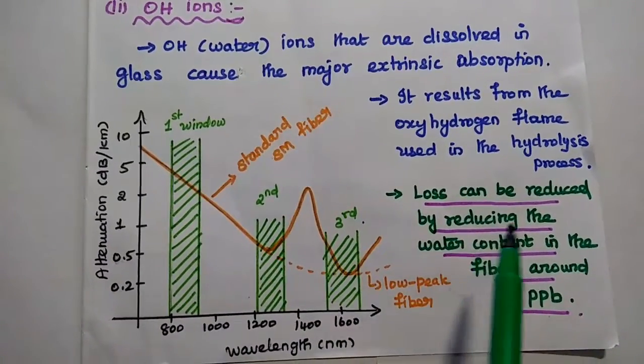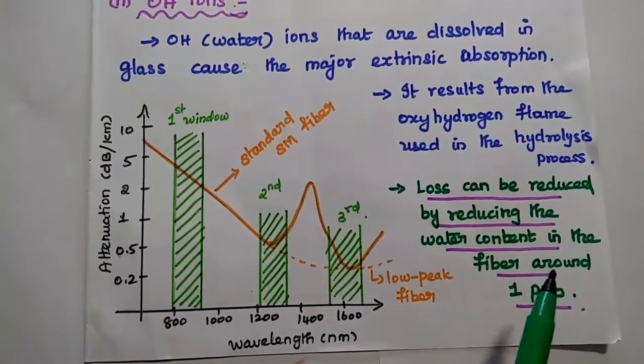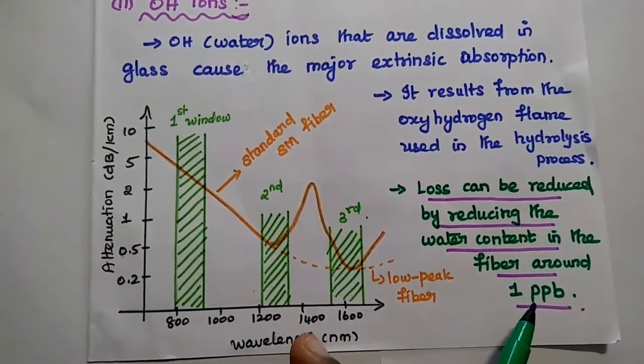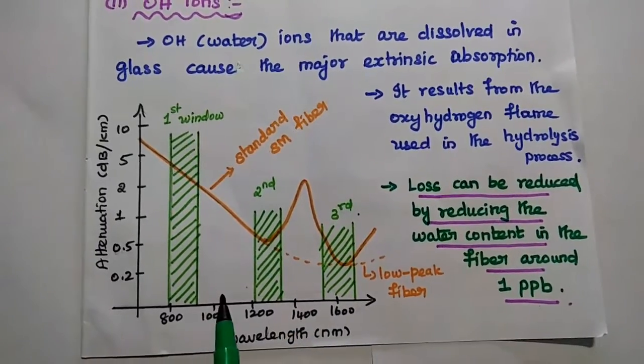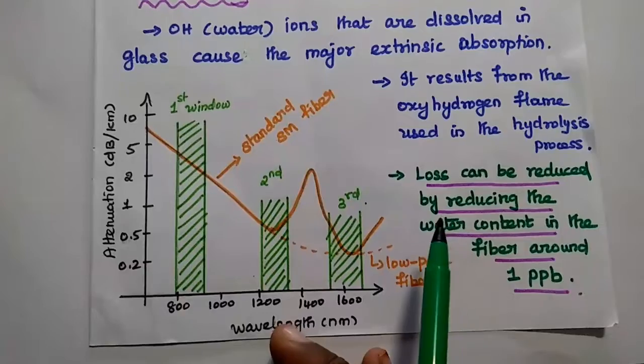This loss can be reduced by reducing the water content in the fiber around 1 parts per billion. This is the attenuation as a function of wavelength for OH ions.